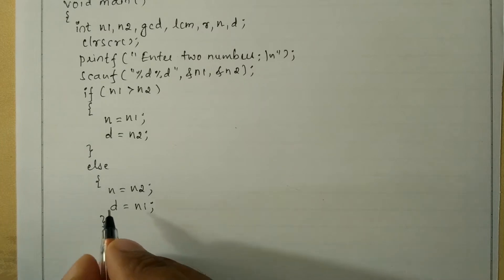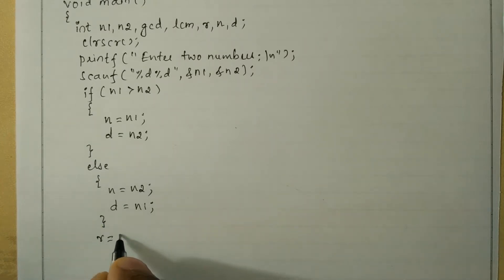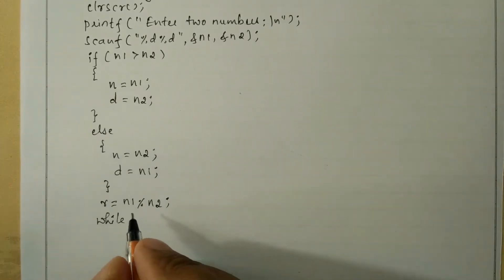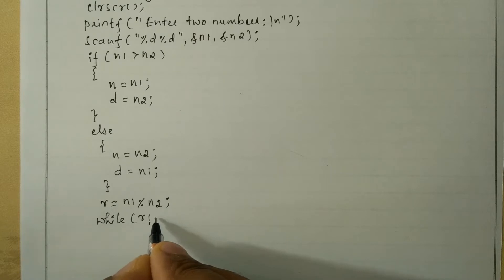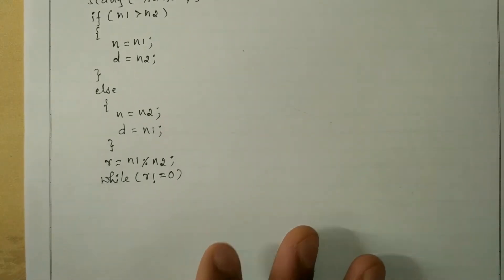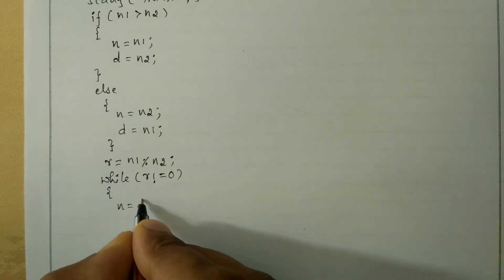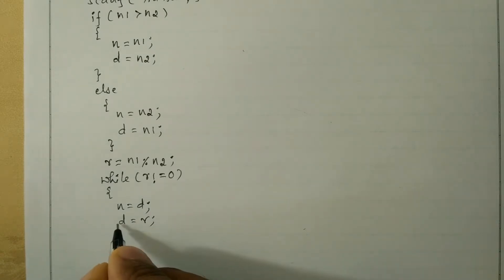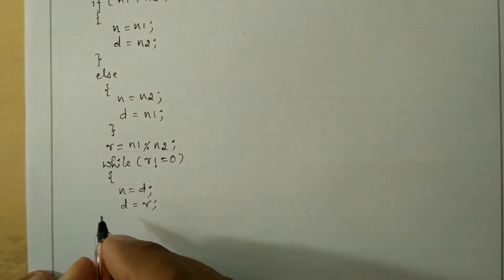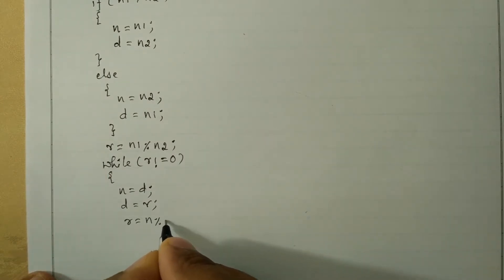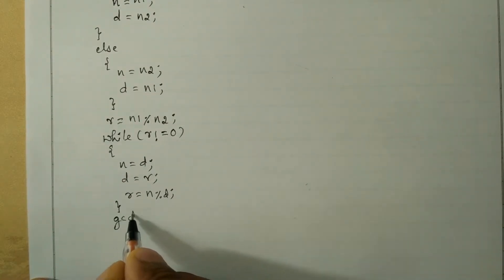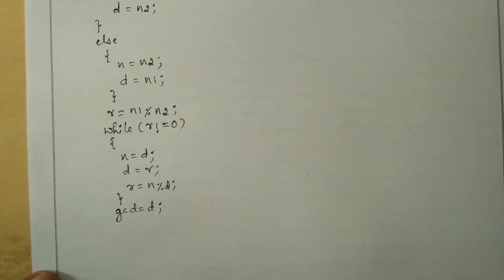Now we write remainder r = n1 % n2. We use the while loop and check the condition: while r is not equal to zero. If true, numerator n is initialized to denominator d, denominator d is initialized to r, and then remainder r = n % d.